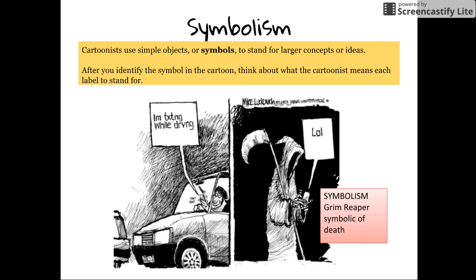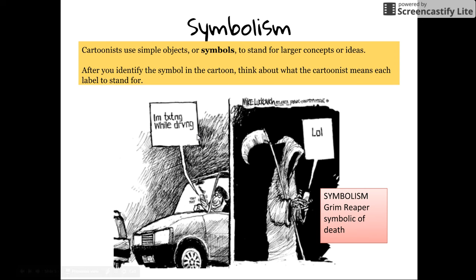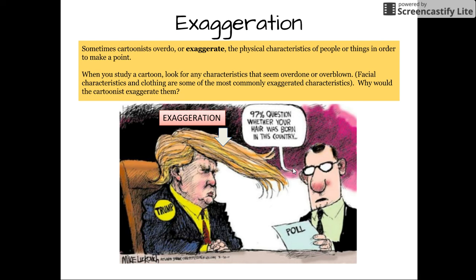Then you have symbolism. Cartoonists use objects or symbols to stand for larger concepts or ideas. Here's an example: you've got a person texting while driving — the words 'text text' and 'I'm texting while driving' are examples of labeling. Then over here you have the Grim Reaper who's texting back 'LOL.' The Grim Reaper is symbolic of death, so the cartoonist wants you to know: beware of texting while driving because the Grim Reaper could be laughing at you. That's a powerful cartoon.